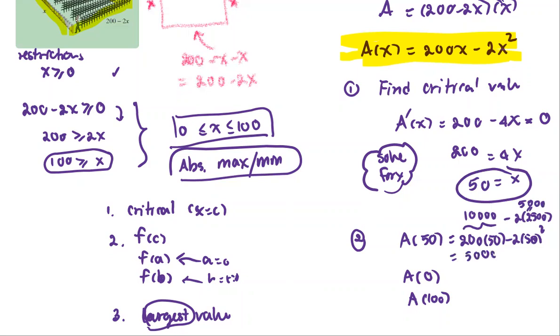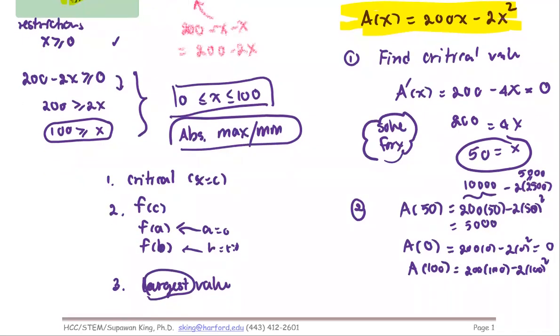And for A(0), we get 200 times zero minus 2 times zero squared, that ends up to be zero. And for 100, 200 multiplied by 100 minus 2 times 100 squared. Do a quick calculation here. So it's going to be 20,000, and the last term here is 20,000 as well. That's zero as well. That's confirming what we analyzed before.